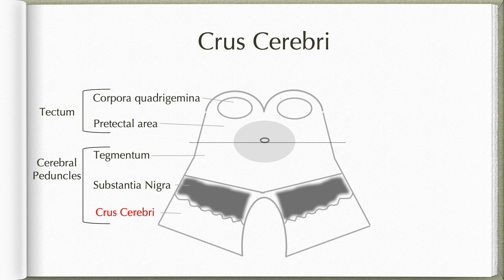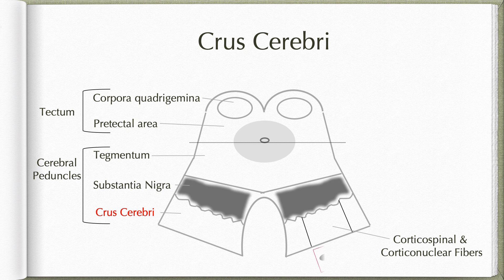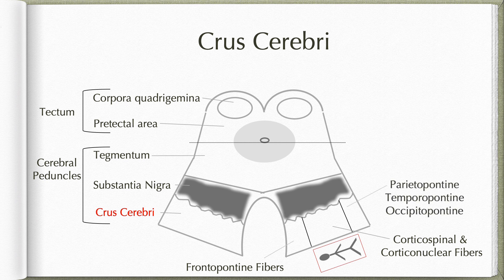Within each crus cerebri, the middle two-thirds is occupied by the corticospinal and corticonuclear fibers. The arrangement is such that the corticonuclear fibers are more medial and corticospinal fibers are more lateral. So we have the head and the cervical region represented medially and the sacral fibers located laterally.